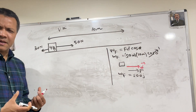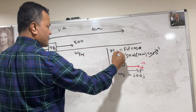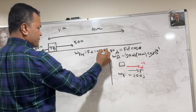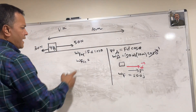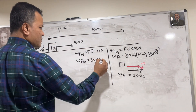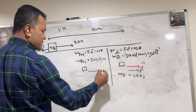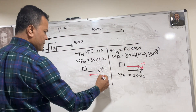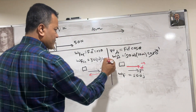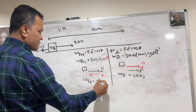Now work done by friction. Work done by friction: F times d times cosine theta. So F is 30 Newton and d is 10 meters. For cosine theta, let's find it out. The displacement vector and the force vector are opposite to each other, so theta is 180 degrees. Cosine 180 degrees is negative 1. So work done by friction is negative 300 joules.